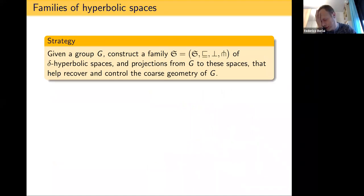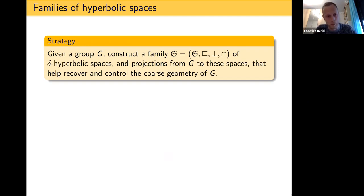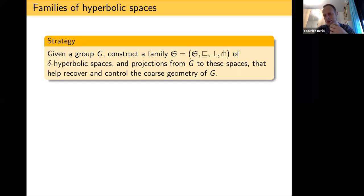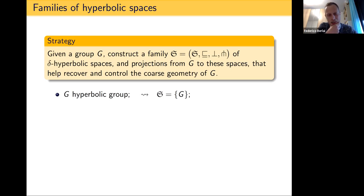The strategy is to study groups by means of a family of hyperbolic spaces — uniformly delta-hyperbolic spaces for a uniform delta — trying to project our group G onto these spaces, understanding the geometry there, and then recovering coarsely the geometry of the group from this information. If you already have a hyperbolic group, there is nothing to do: the family consists of one hyperbolic space, the group itself, with the identity as the projection. For a direct product of hyperbolic groups, the family is clear: two factors G and H, with two projection maps.